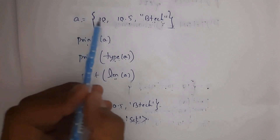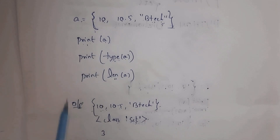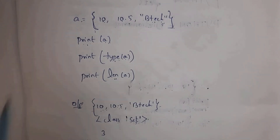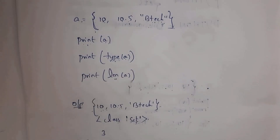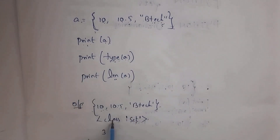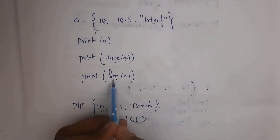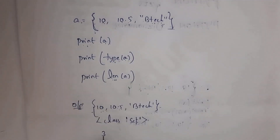Here is one more example. I written a equal to {10, 10.5, 'btec'} in curly braces. Whenever you write print(a), you will get output 10, 10.5, btec. Next, print(type(a)) — the type function is used to identify the data type. Since I used curly braces, you will get output class set. And print(len(a)) — the len function identifies the length of the set. There are 3 objects total, so the output is 3.